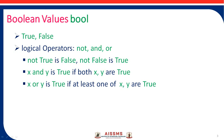After numbers, we have boolean values true and false. Just like numbers, we can also perform operations on these two values. For numbers we perform arithmetic operations like addition, subtraction, multiplication, and division. For boolean values, we perform different logical operations. These logical operations are NOT, AND, and OR.